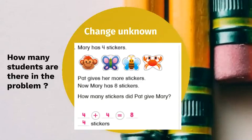We put four in our mind and then we keep counting to get to eight. Let's try it together: four... five, six, seven, eight. How many fingers did you put up? You put up four fingers. So the missing number is four. Four and four is eight. Great job everyone!